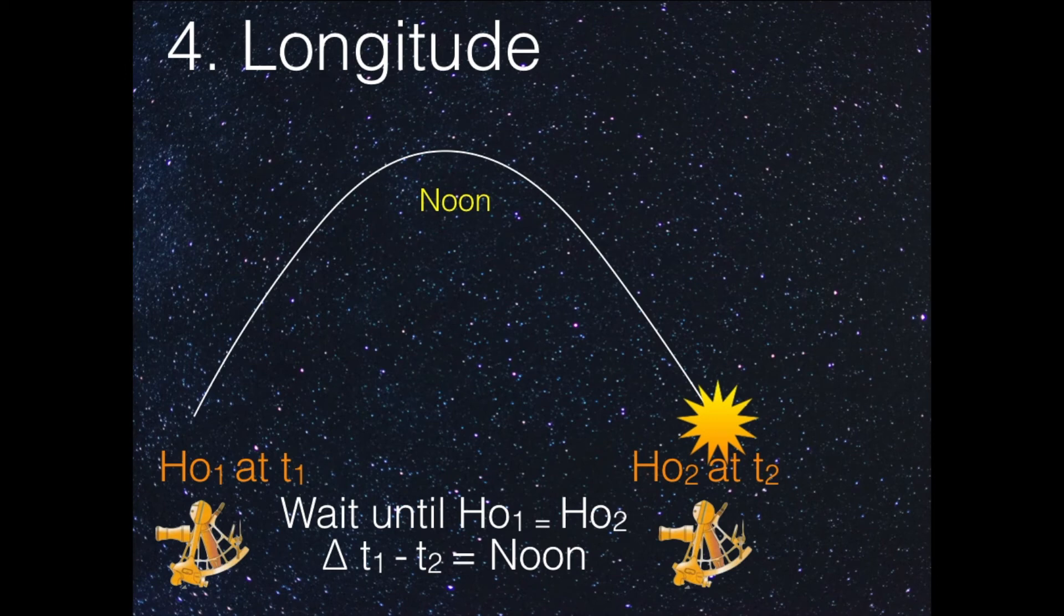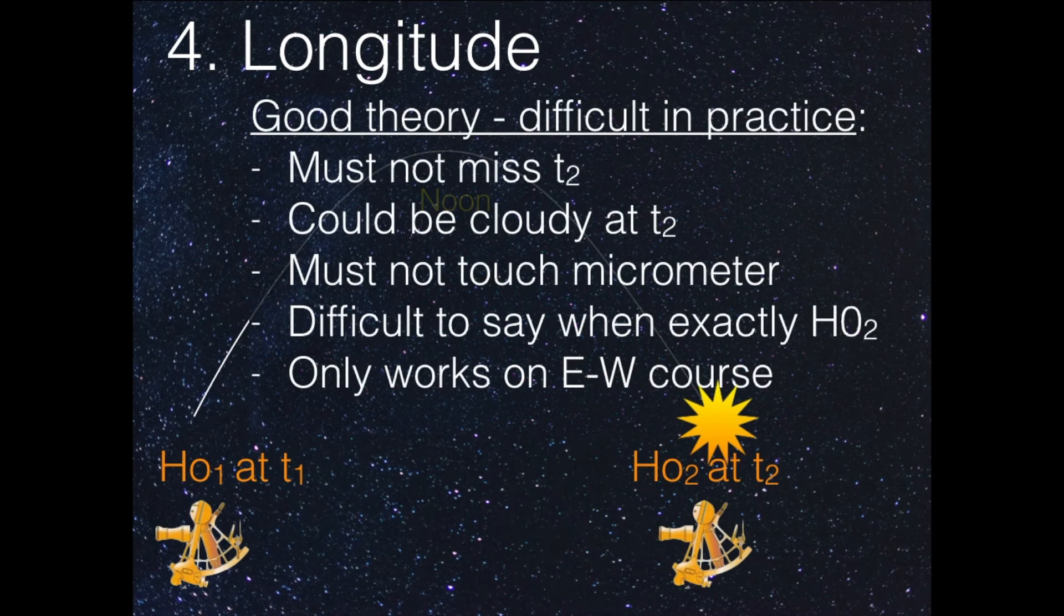So why is this not taught? What is the problem? It's good in theory, but it's a bit difficult in practice. Because you really mustn't miss T2. So if you take a morning sight at, I don't know, 10 o'clock or something, and you have a certain angle, you must really wait in the afternoon until the height HO2 is exactly the same. And at exactly that time when that happens, it could be cloudy. And also, it's very important that you're not allowed to touch the micrometer. It must be set to the same height. HO1 must be the same as HO2. And the thing is that it's very difficult to take a sight when you're not allowed to touch it. So you have to wait, and then maybe you missed it, and you don't have many seconds to spare.